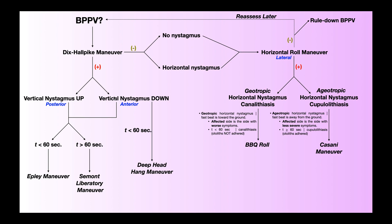A negative Dix-Hall-Pike maneuver can either be one of two things: either the maneuver produces no nystagmus at all, or it may reproduce horizontal nystagmus. Even though this is still nystagmus, for the Dix-Hall-Pike maneuver this is still considered a negative result, and we'll get to what you actually do with that result in a few minutes.